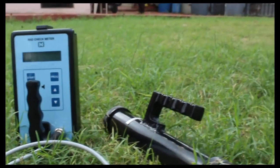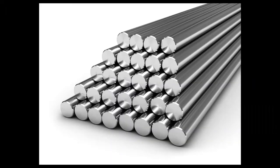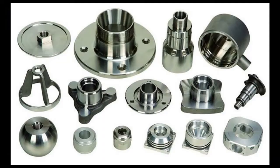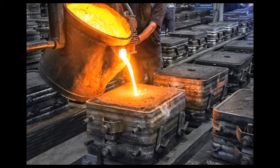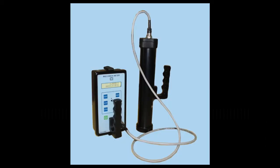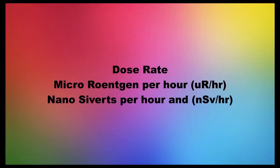It is used to measure radioactive contamination in bars, billets, rods, engineering components, and castings manufactured by metal industry. It basically measures radioactive contamination by indicating dose rate in microroentgen per hour and nanosieverts per hour.